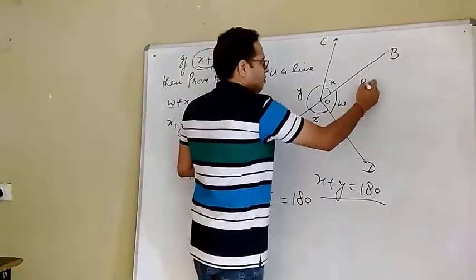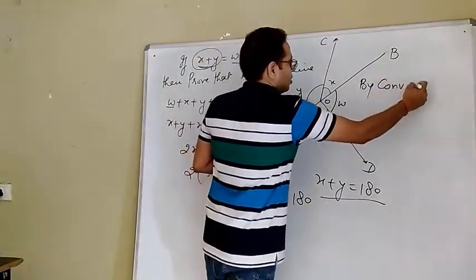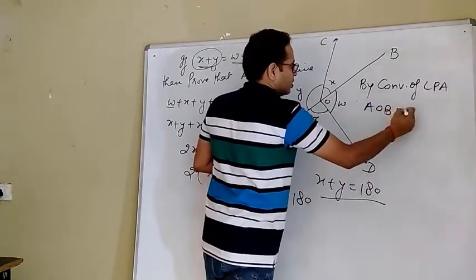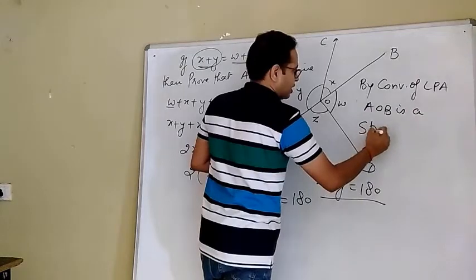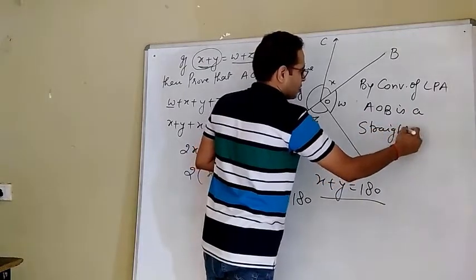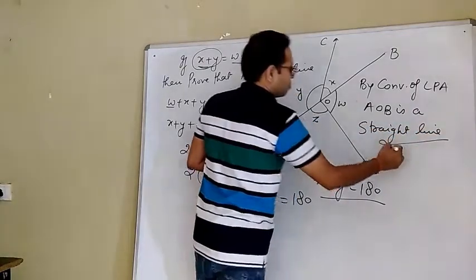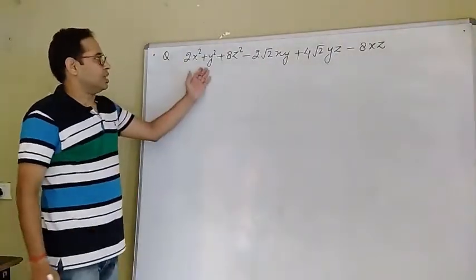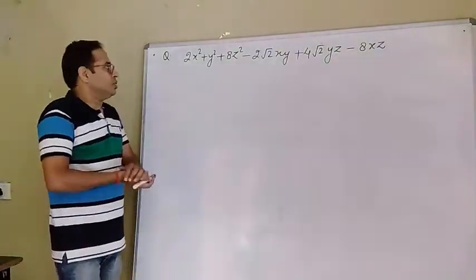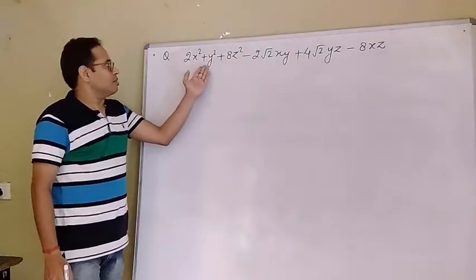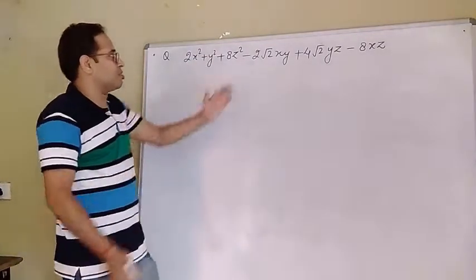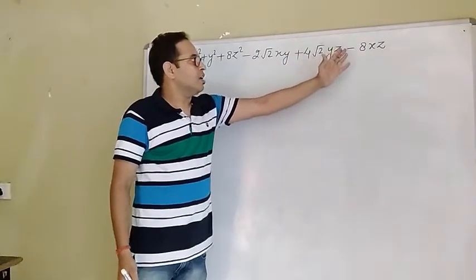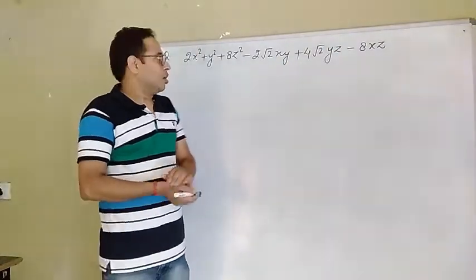By converse of LPA, AOB is a straight line. Hence proved. The next question is asked by Akriti Agrawal, class 9. We need to factorize 2x² + y² + 8z² - 2√2 xy + 4√2 yz - 8xz.